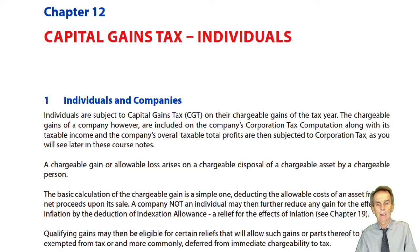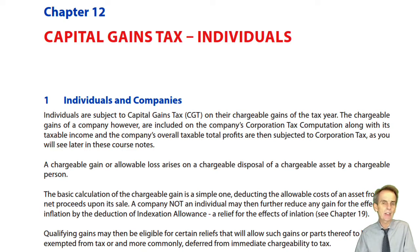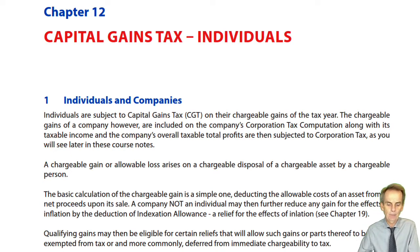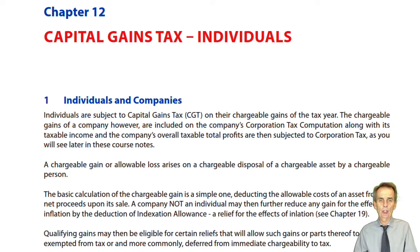How do we make a capital gain? In essence, it's a very simple idea. I buy an asset — what we'll call in a moment a chargeable asset — for say £20,000. Some months or years later, I then sell that asset for £30,000. I've made a gain: sales proceeds 30, less cost 20, I've got a gain of £10,000. That gain, like with income, will be recorded in relation to a tax year.